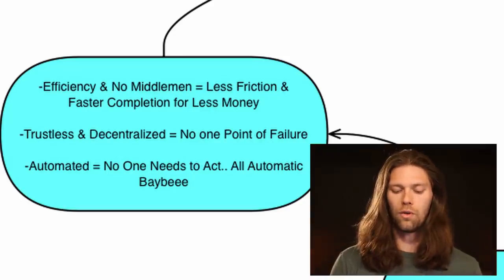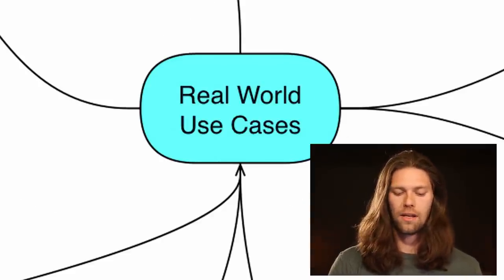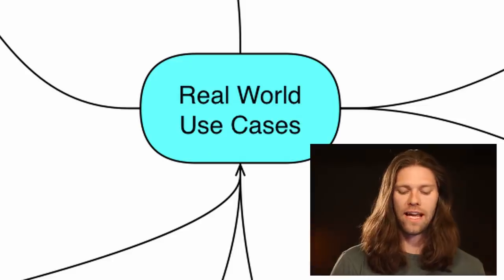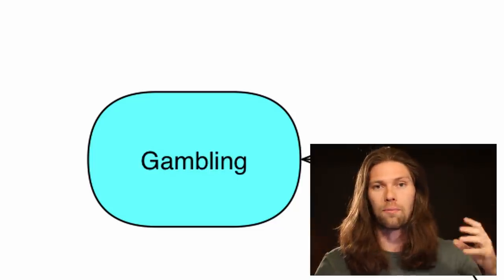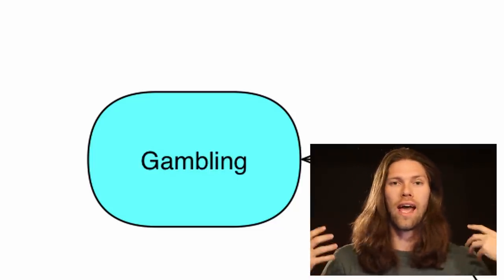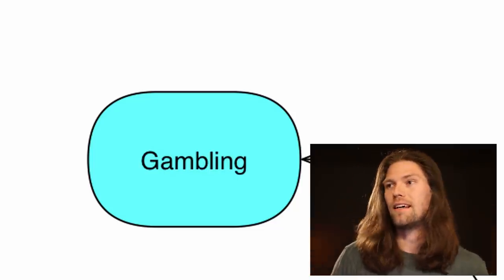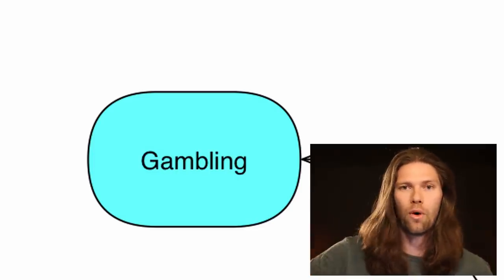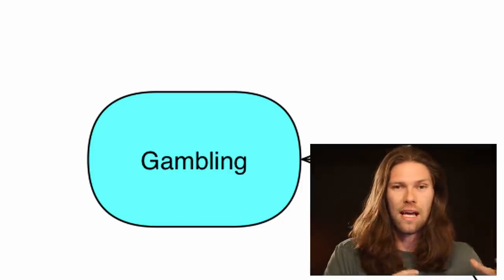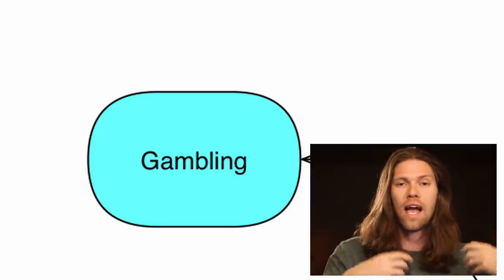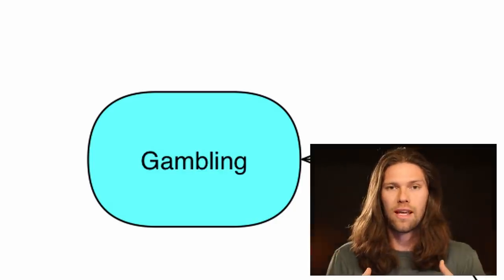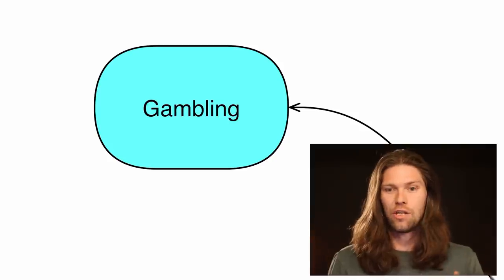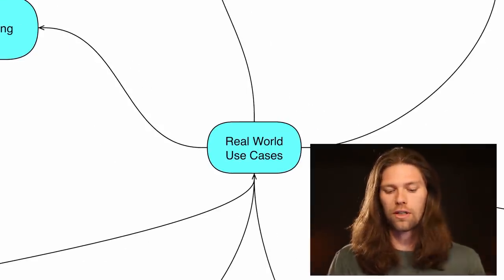Now let's get into some real world use cases. First, gambling. This is a good use for the Oracle that pulls real world data. You could have a bet with someone that a basketball game will end with a team winning by more than 10 points. You could have a smart contract set beforehand with an Oracle feeding that contract data. After the game completes, the contract executes and the winner automatically receives their money.